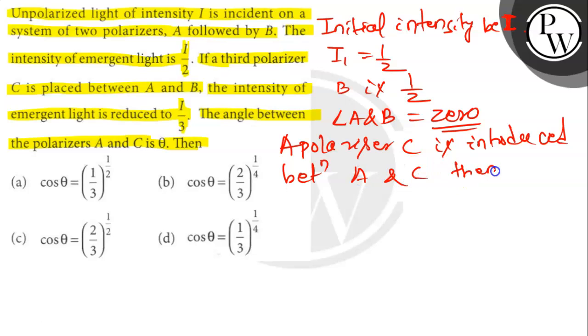Then by Malus's law, after B, Ib is equal to 1 by 2. And after C, Ic is Ib cos² θ.